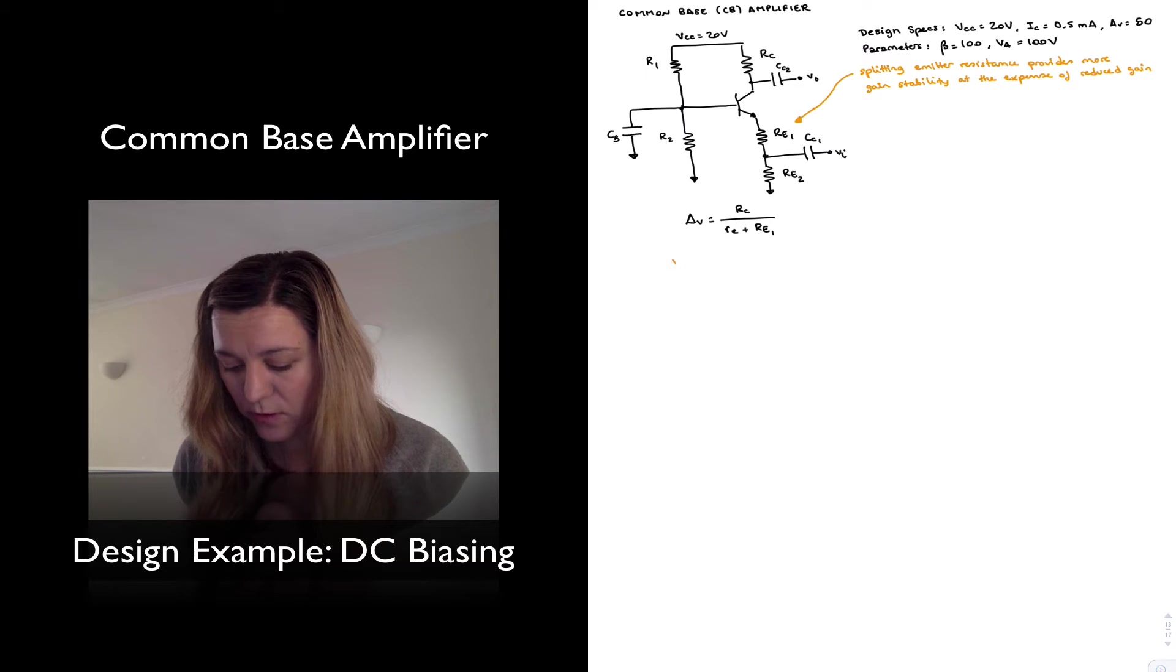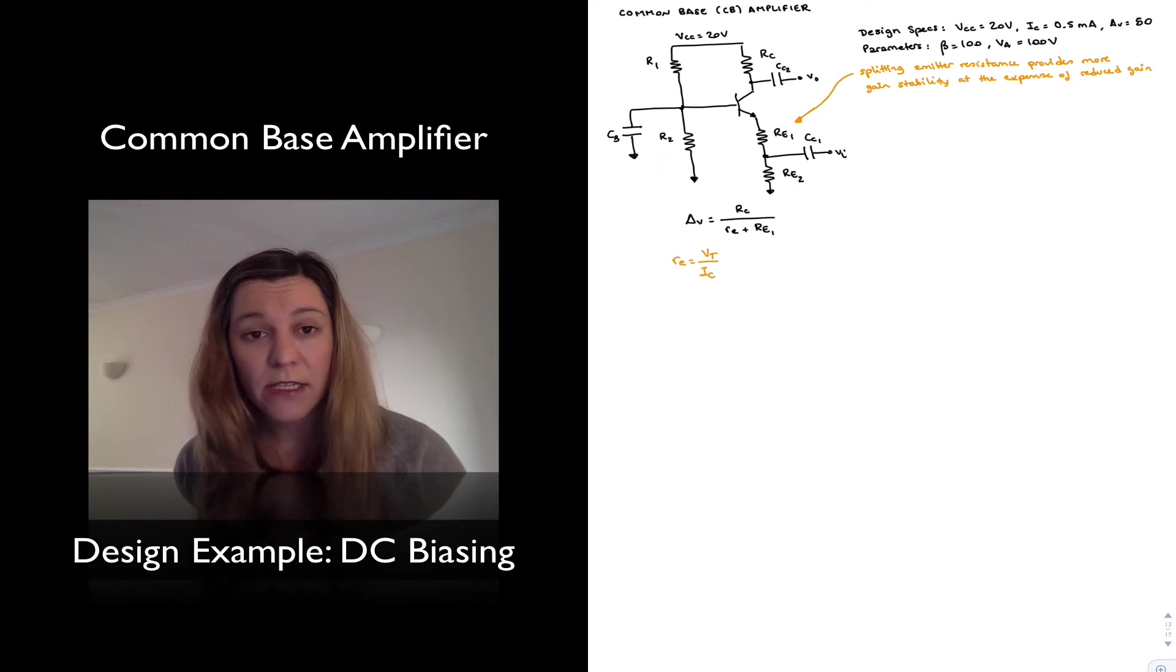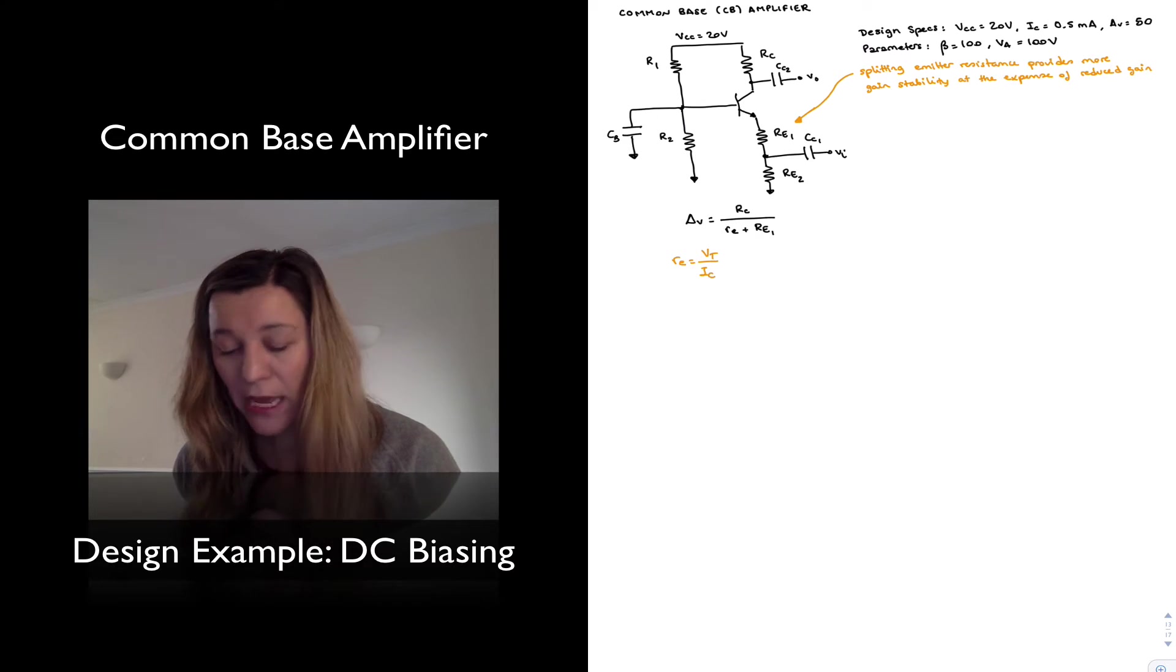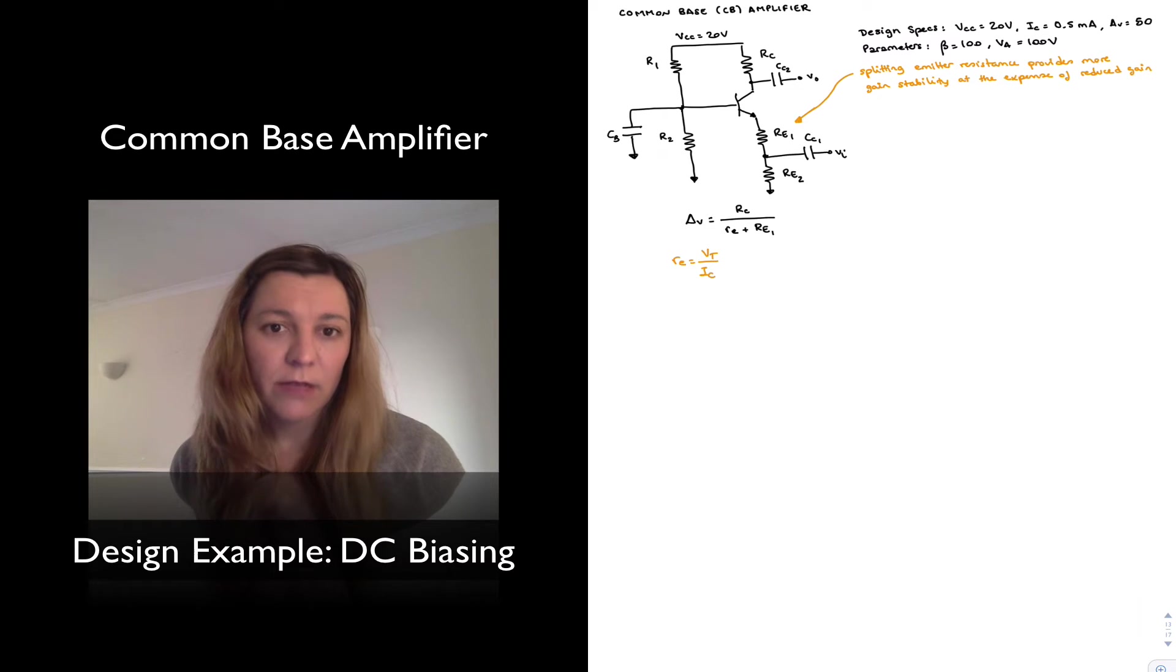And the thermal voltage is directly dependent on temperature. And so if I have my gain just being dependent on little RE, my gain will be dependent on temperature. By adding RE1 and setting it up so that it ideally swamps little RE, then I'm making my voltage gain more robust or less dependent on temperature variations.